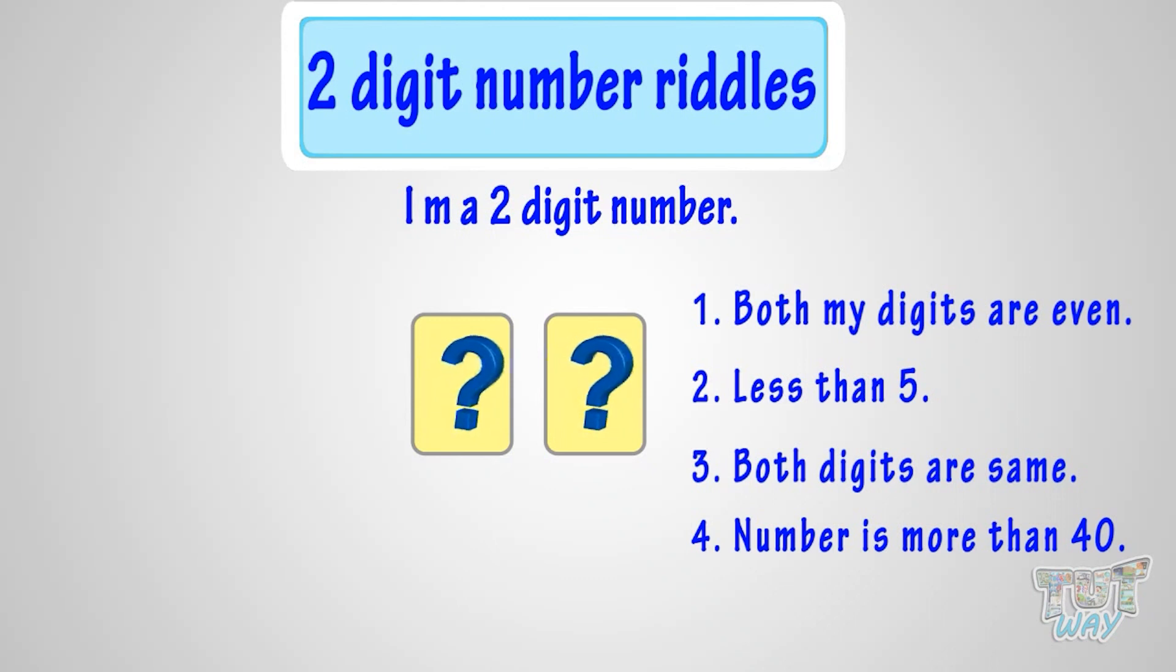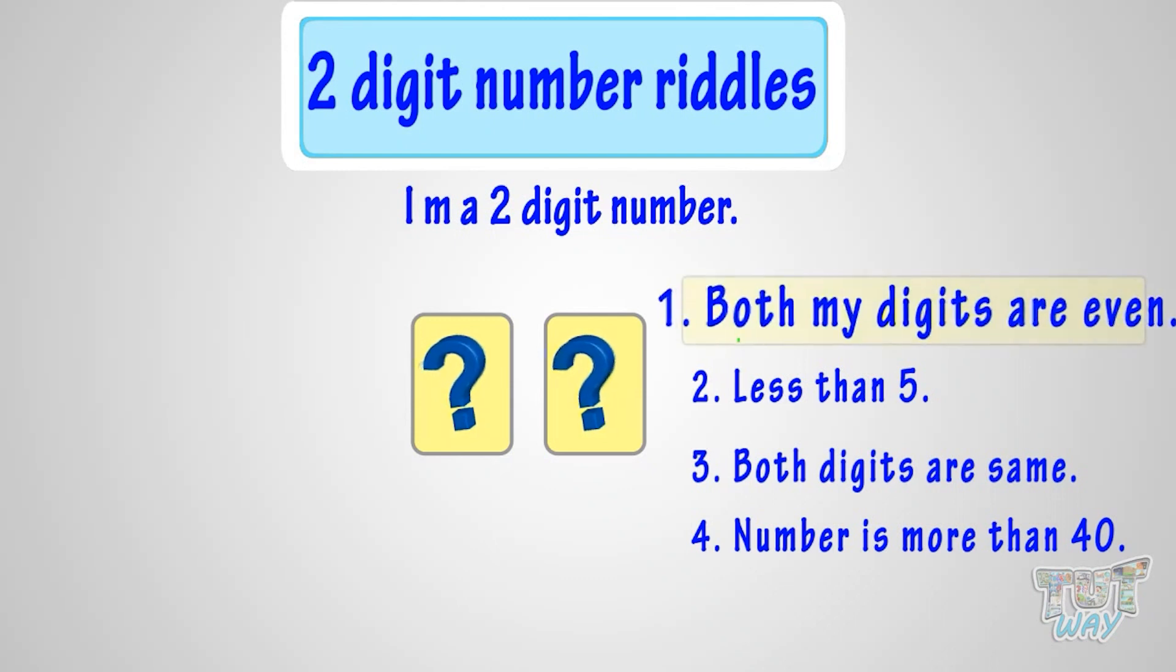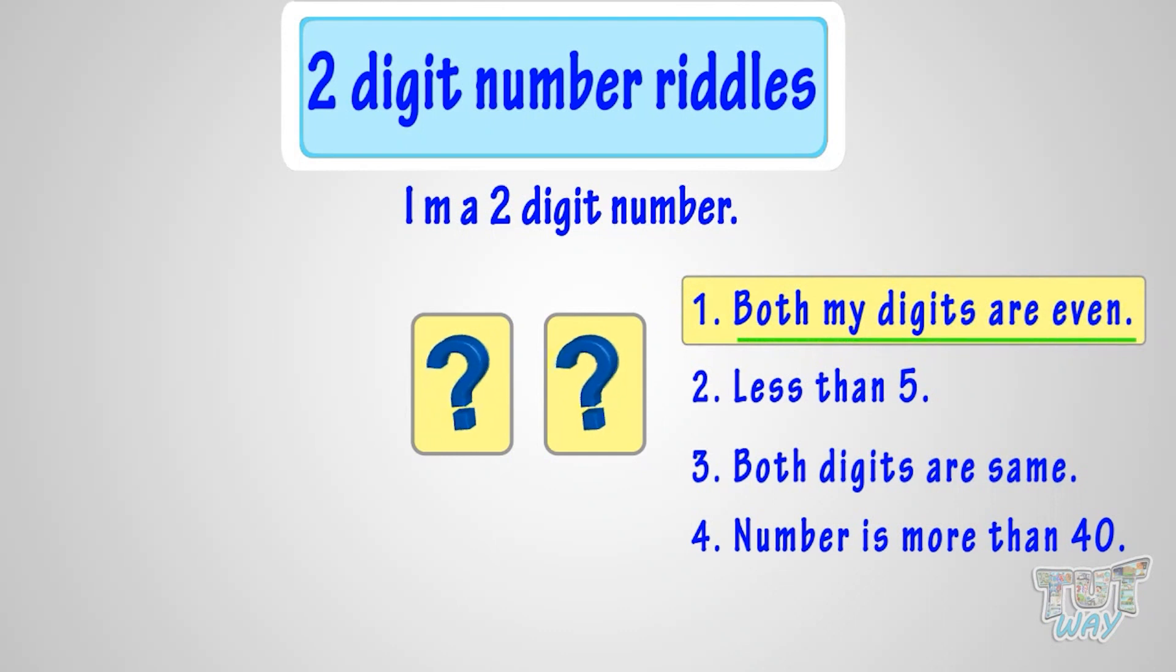Using the first clue, both digits are even. It means numbers can be from 2, 4, 6, and 8.